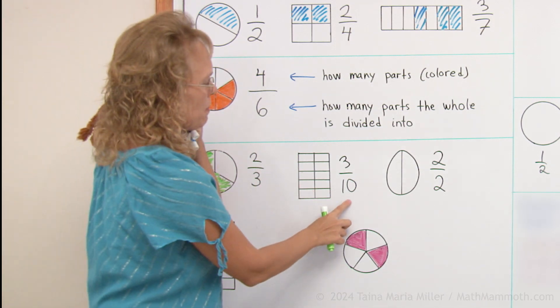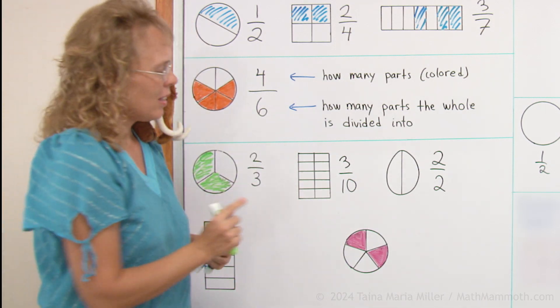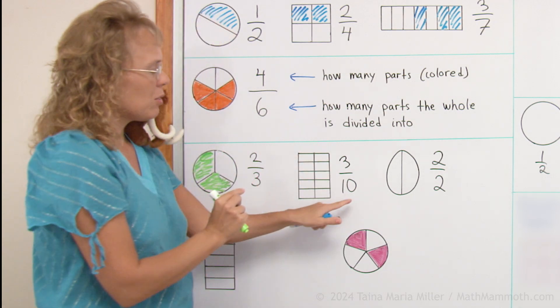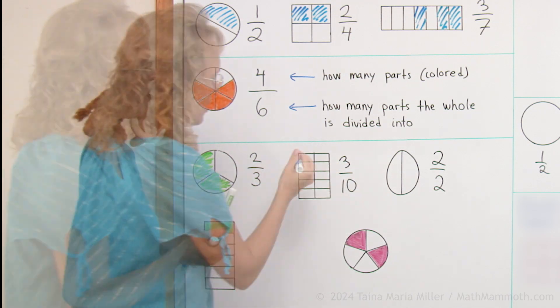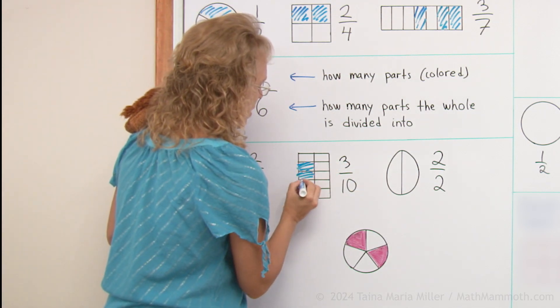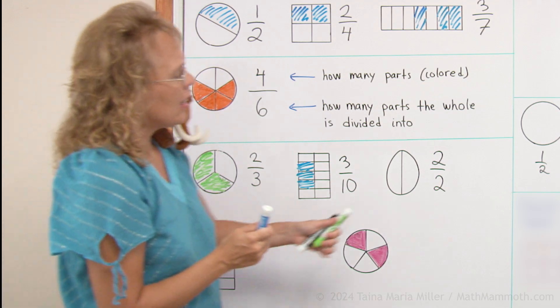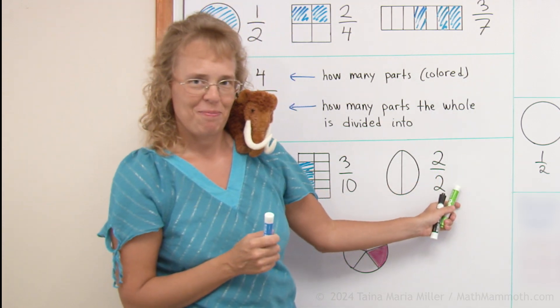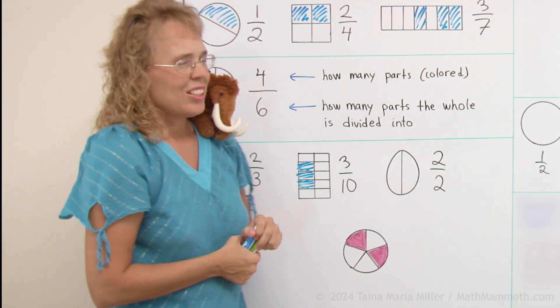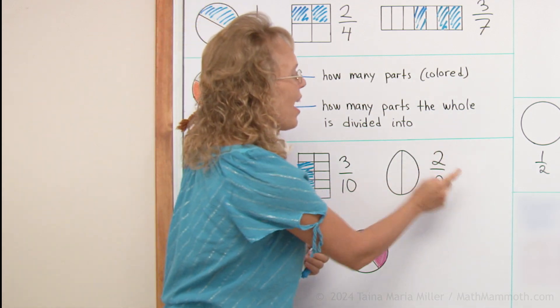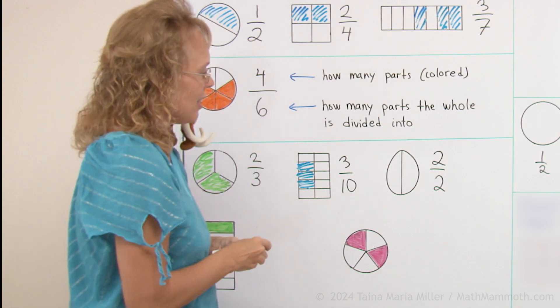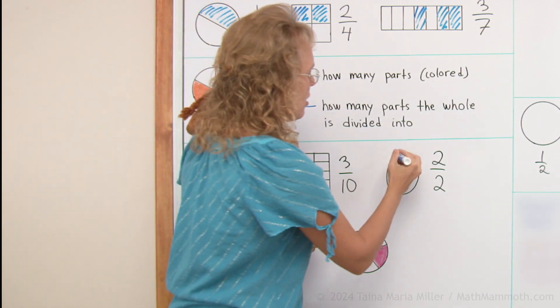What fraction is this one? This shape is divided into 10 parts. Each part is a tenth. We have three tenths. So I color three. And then what fraction is this? You remember when I was talking about the one half? Here we have two halves, two halves. So to color, I need to color both.